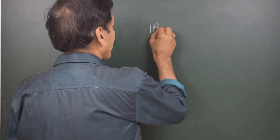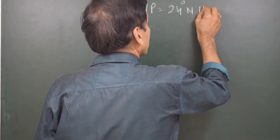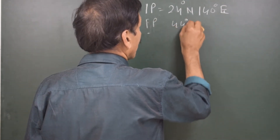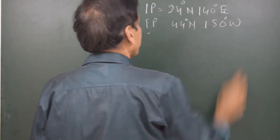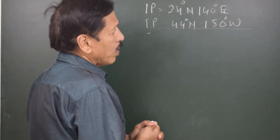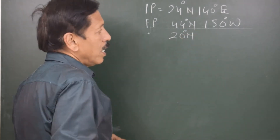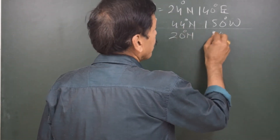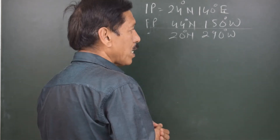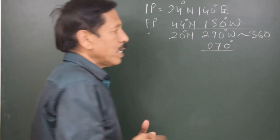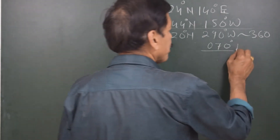Let us take a simple case: going from one place to another. The initial position is 24 degrees north, 140 degrees east, and the final position is 44 degrees north, 150 degrees west. We are going north and east. The difference in longitude is 140 east plus 150 west = 290 degrees west, but since that is more than 180 degrees, we subtract from 360, giving 70 degrees east.